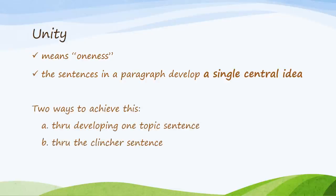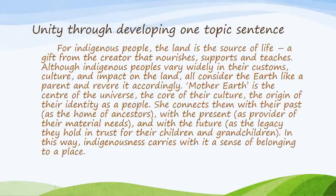There are two ways to achieve unity: through developing one topic sentence, which may be directly or indirectly stated — explicit or implicit — or through the clincher sentence. Here is one example of a paragraph that is unified. Try to pick the topic sentence, pause the video, and read. If you identify the first sentence as the topic, then you are correct. See how all the other sentences support the first sentence.